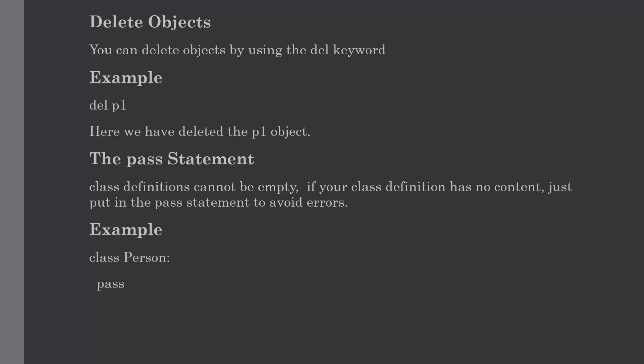Our next topic is how to delete entire objects. We can delete an object by using the del keyword, as we have seen in the previous example where we deleted the object properties. In this example we have deleted the object p1. Let me show you with some example.